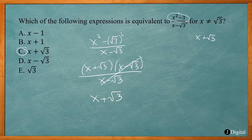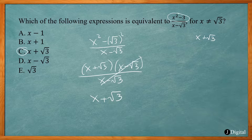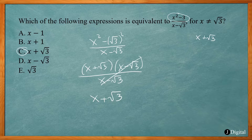If you had tried the conjugate method, it wouldn't work out because you'd end up with x to the third power on top, and that wouldn't cancel. You might get an equivalent expression, but it wouldn't match one of the answer choices. I hope this video helped you understand radicals a little bit better. Thanks.